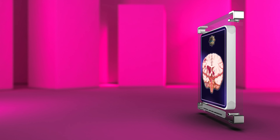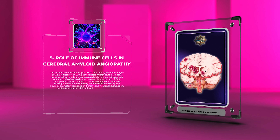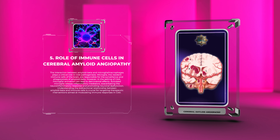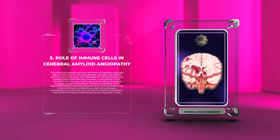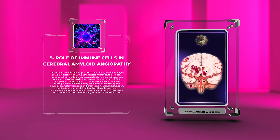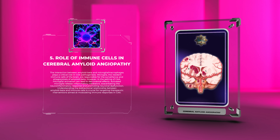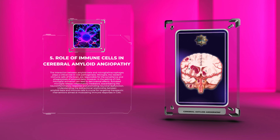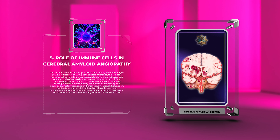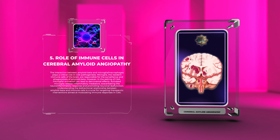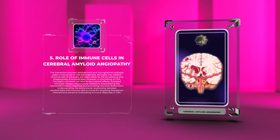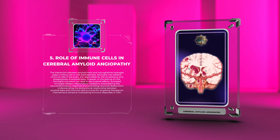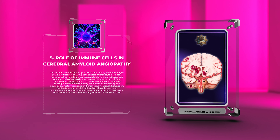The interaction between amyloid beta and microglia/macrophages plays a critical role in CAA pathogenesis. Microglia, the resident immune cells of the brain, are responsible for the surveillance and phagocytosis of amyloid beta. However, in the setting of CAA, microglial activation can lead to detrimental effects. Activated microglia release inflammatory mediators, exacerbating the neuroinflammatory response and promoting neuronal dysfunction. Understanding the bidirectional relationship between amyloid beta and immune cells is crucial for targeting therapeutic interventions aimed at modulating immune responses in CAA.